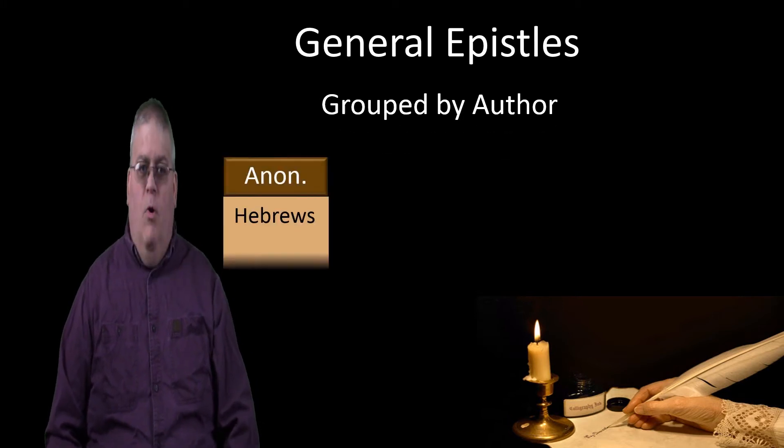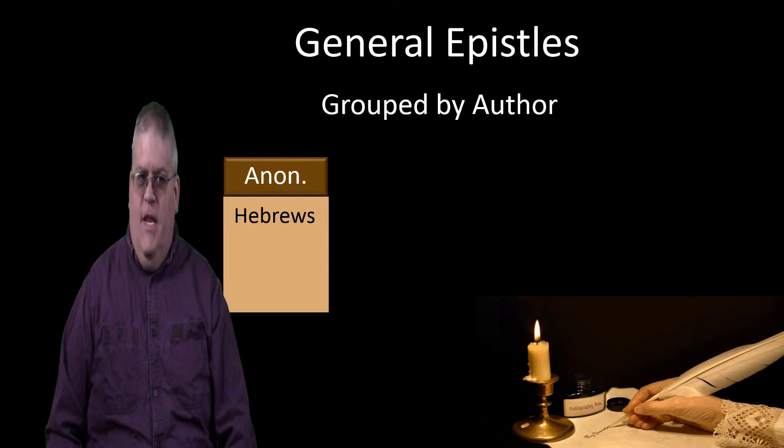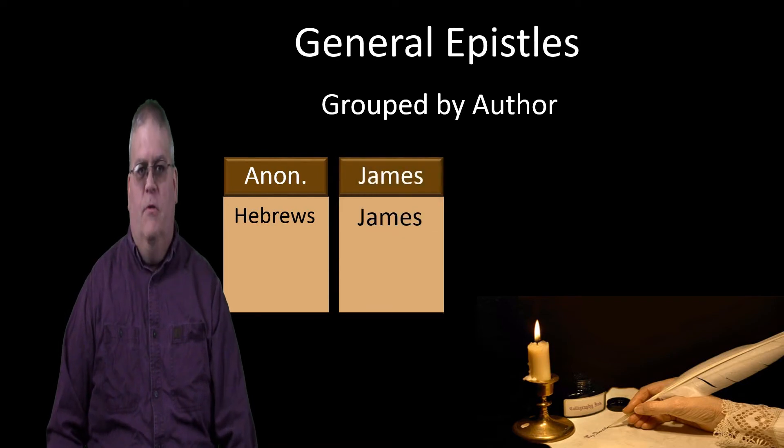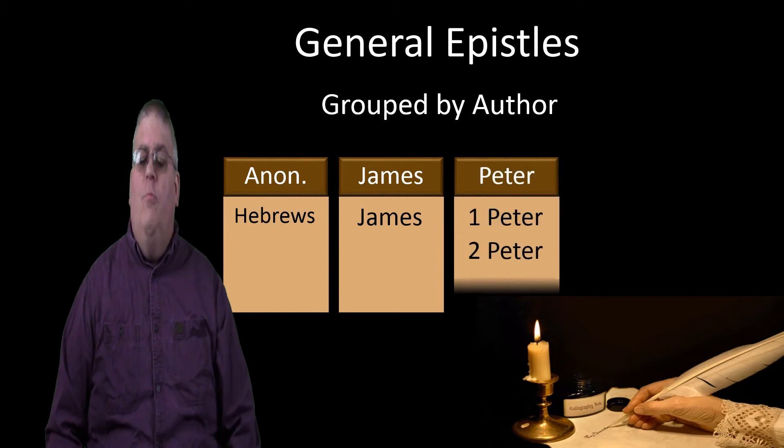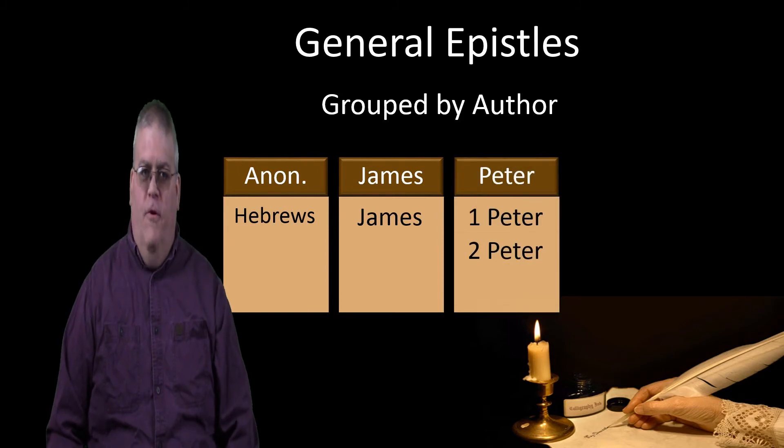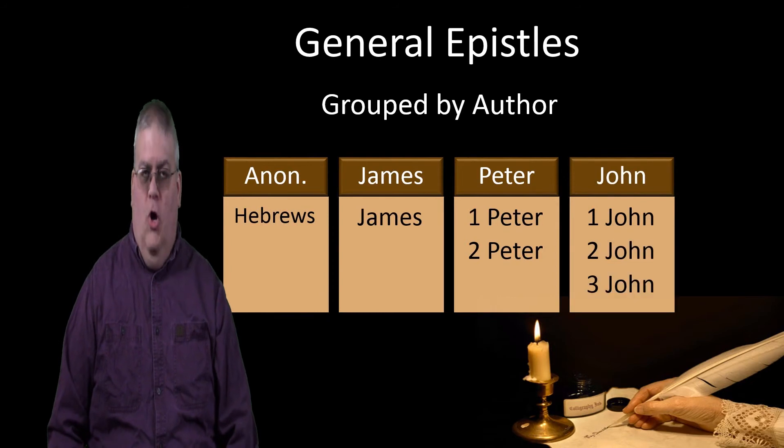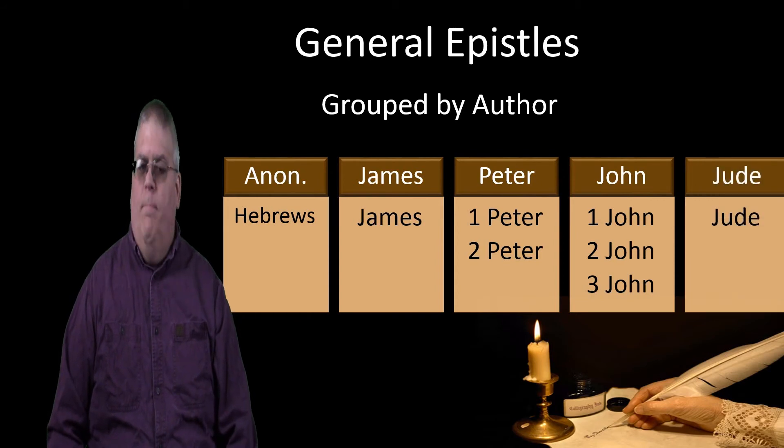Now, there's one book that's anonymous, and it's named after its recipients, that is, the book of Hebrews. And there's one book written by James, called the book of James. And there are two books from Peter, called 1 and 2 Peter. And there are three books written by John—1 John, 2 John, and 3 John. And there's one book written by Jude, called the book of Jude.